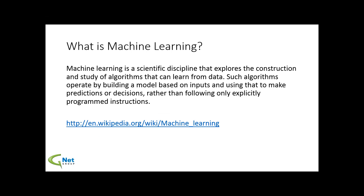I'll start off with a general definition of machine learning — I pulled this right off Wikipedia. It's a scientific discipline that explores the construction and study of algorithms that can learn from data. That's where it's a little bit different from traditional analytics. It's not just summing things up, averaging them, getting your standard deviations. It's actually bringing new data into an application to give you new predictions. You basically build a model using your historical data, store the patterns in it, and then apply them to new data as it comes in.